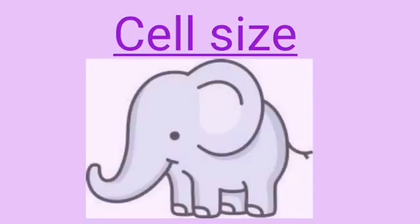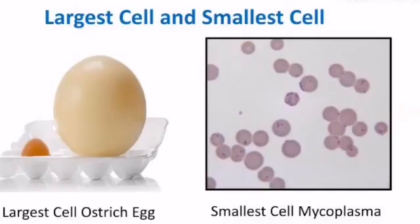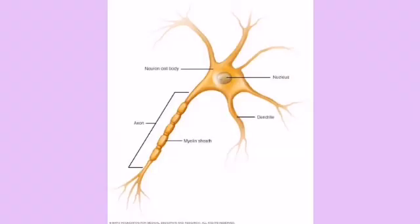Cells also come in different sizes. Like mycoplasma, it's the smallest cell which ranges 0.1 to 0.5 micrometers in its diameter. Nerve cell is the longest cell of the body and the largest cell is the ostrich egg.